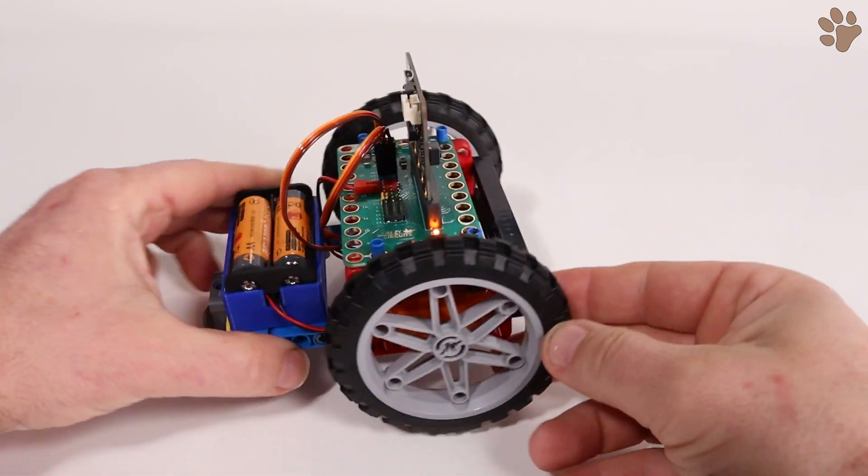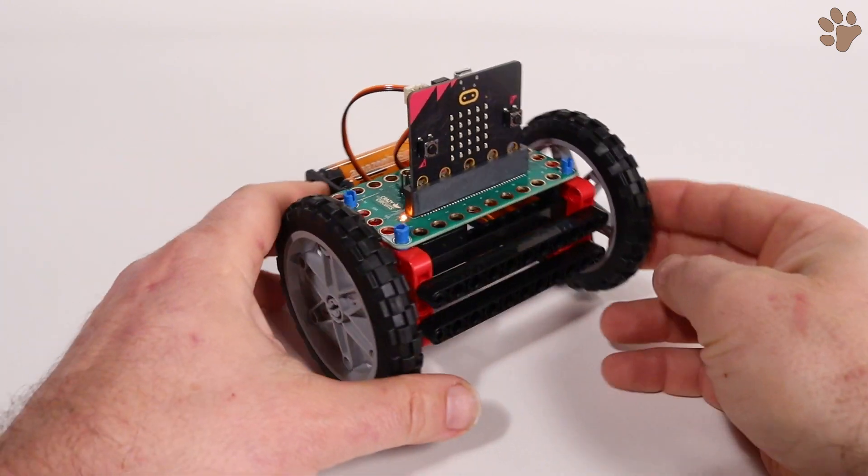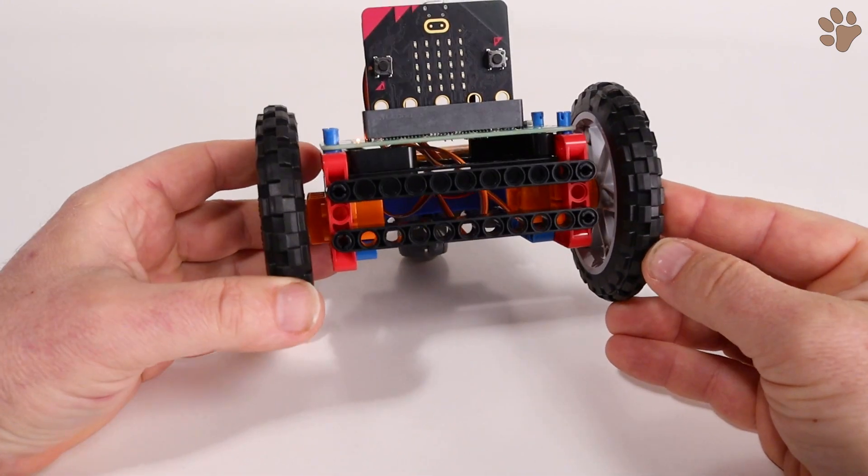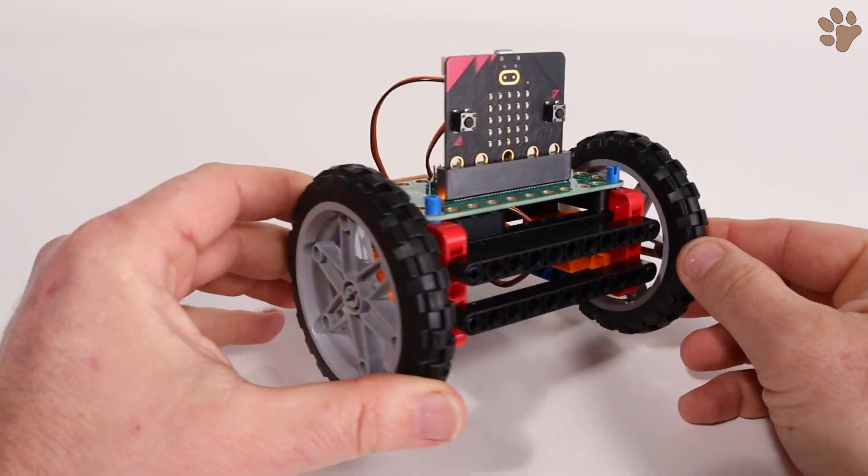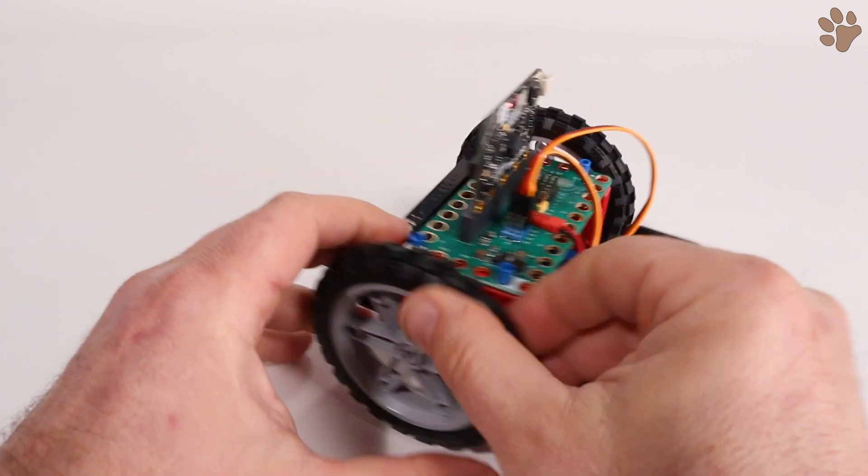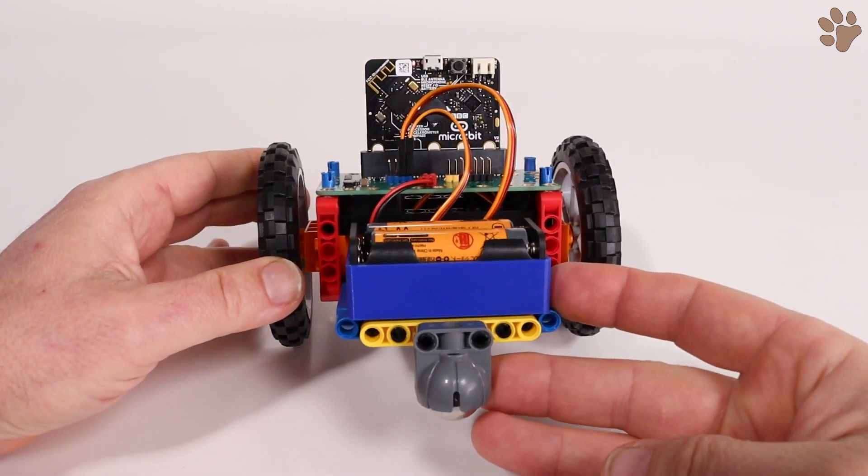Congratulations! You just completed the physical assembly of the rover. The great thing about the rover is how modular it is. You can add all sorts of incredible accessories. But first, let's add a bit of programming to try it out.